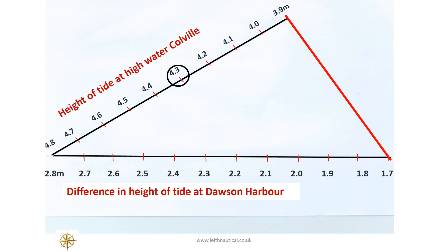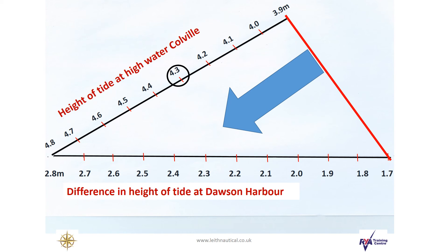If the high water height of tide is 4.3 metres, we can draw a parallel line to the one that connects our two scales at 4.3 metres. We can then see that the difference in the height of tide at Dawson Harbour is 2.2 metres.